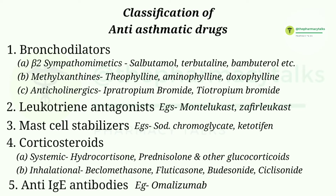Fourth class is corticosteroids. They are further categorized as systemic and inhalational. Systemic class includes hydrocortisone, prednisolone, and other glucocorticoids. Inhalational corticosteroids include beclomethasone, fluticasone, budesonide, ciclesonide, and flunisolide. The last class is anti-immunoglobulin E antibody. The example is omalizumab.